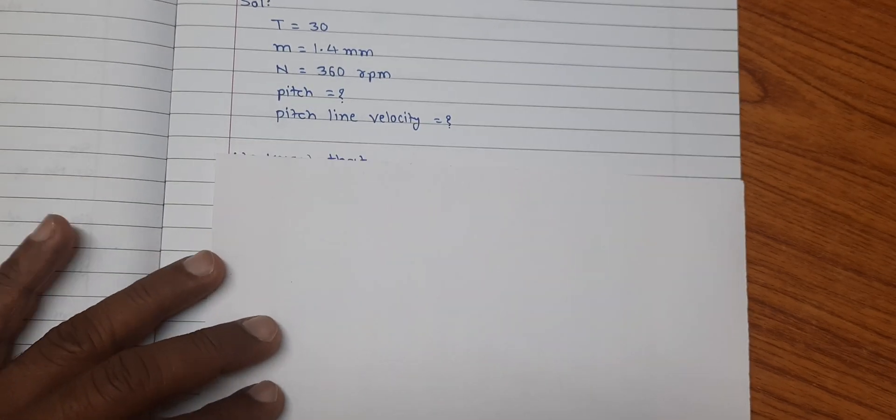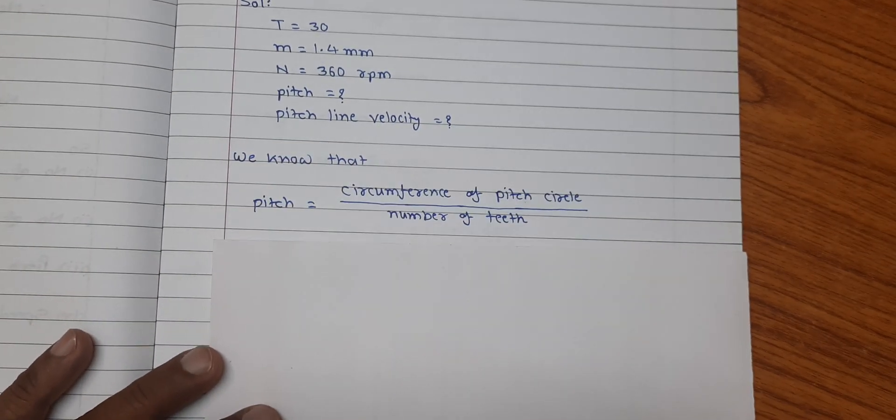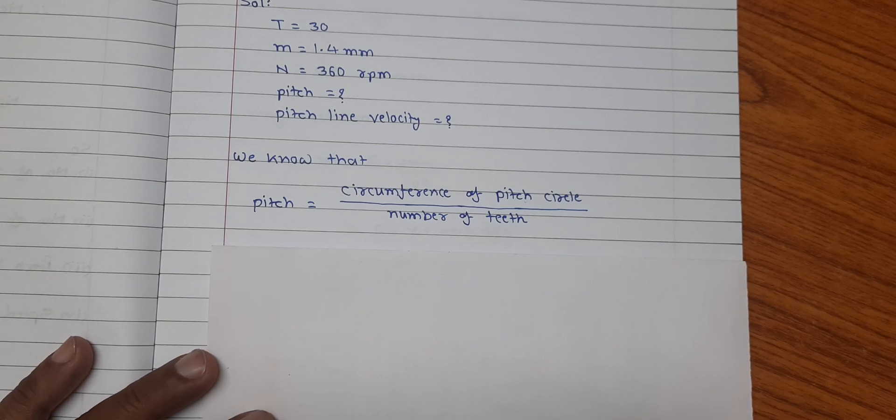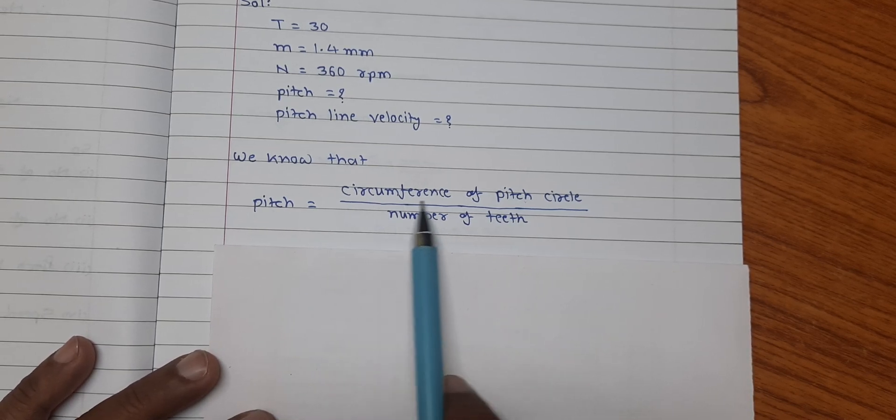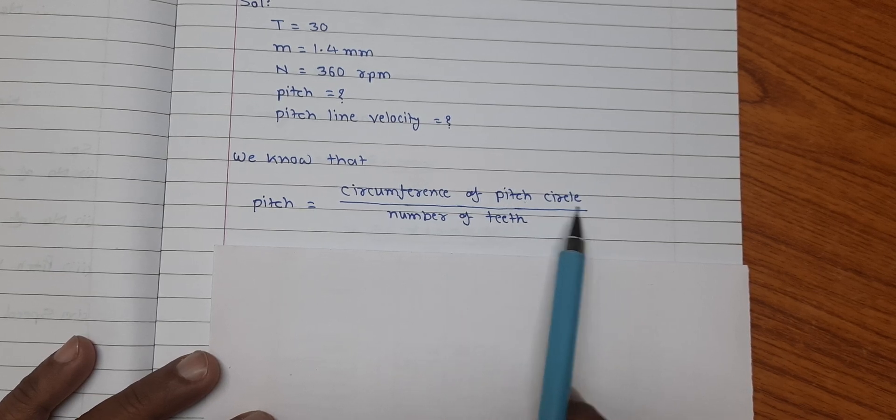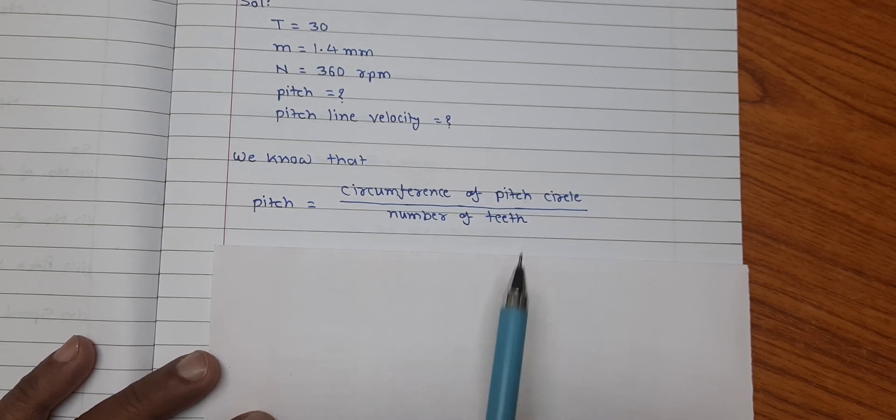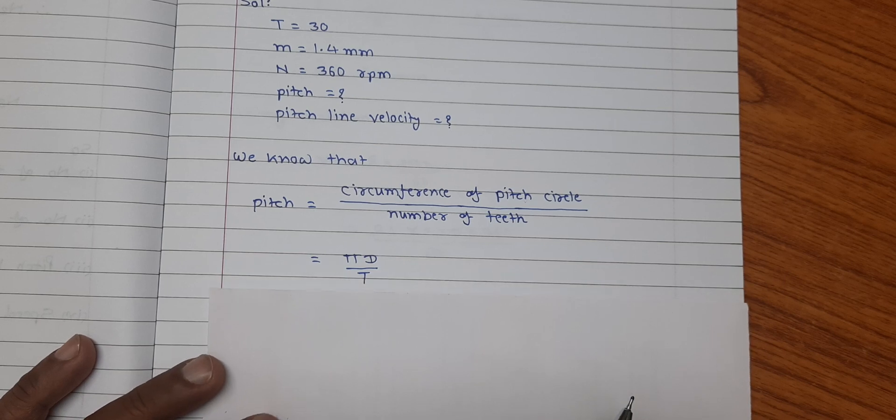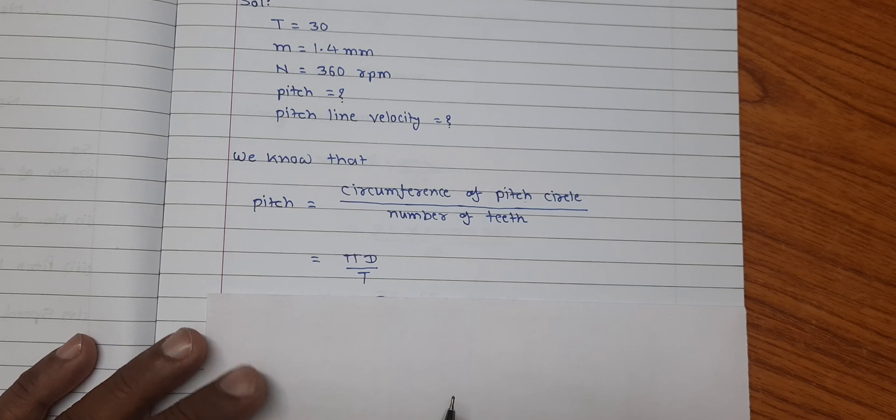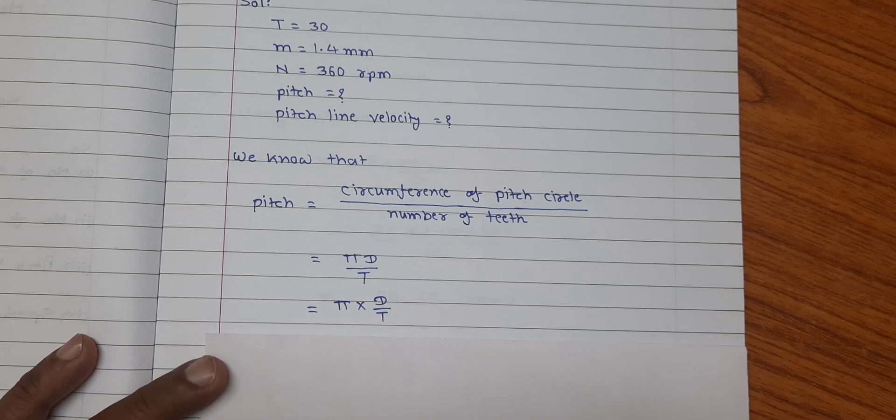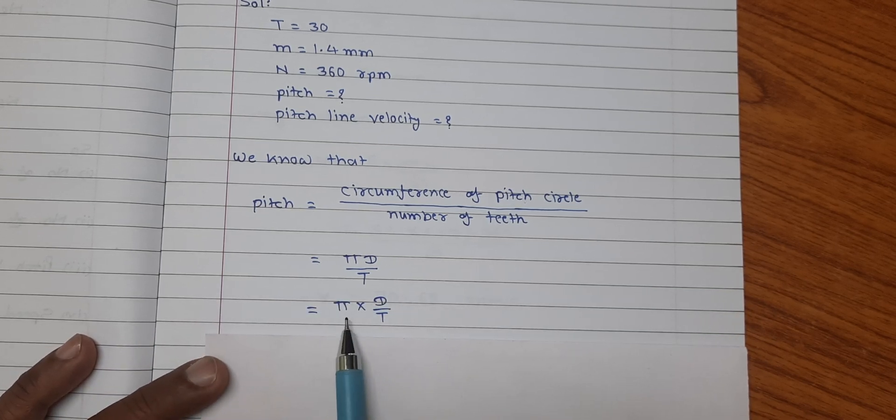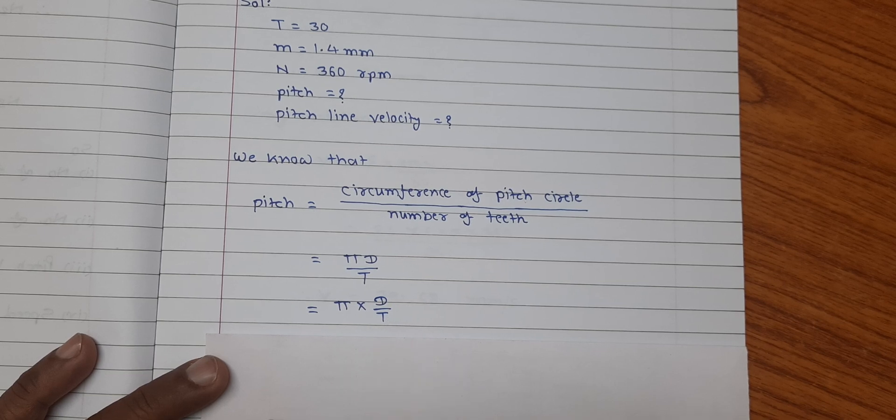Friends, we know that from the definition of pitch, it is given by pitch is equal to circumference of pitch circle divided by number of teeth. So that can be written as pi into d divided by t. And hence, it can be rearranged pi into d divided by t.